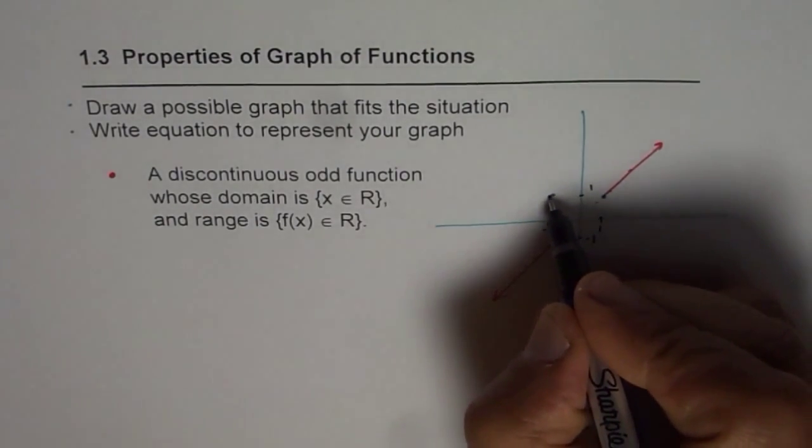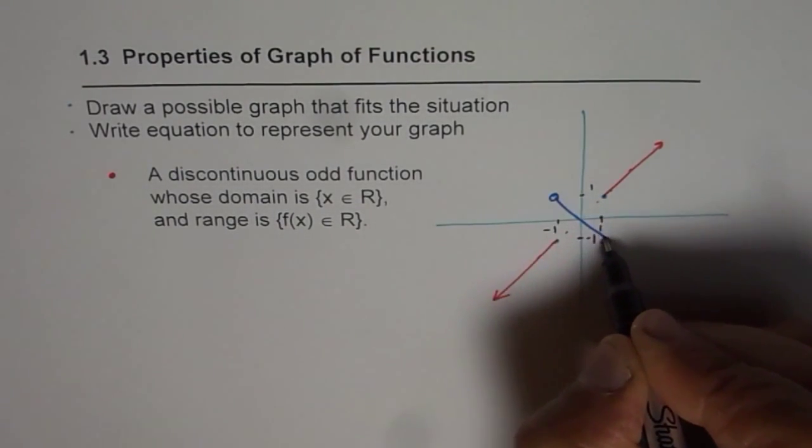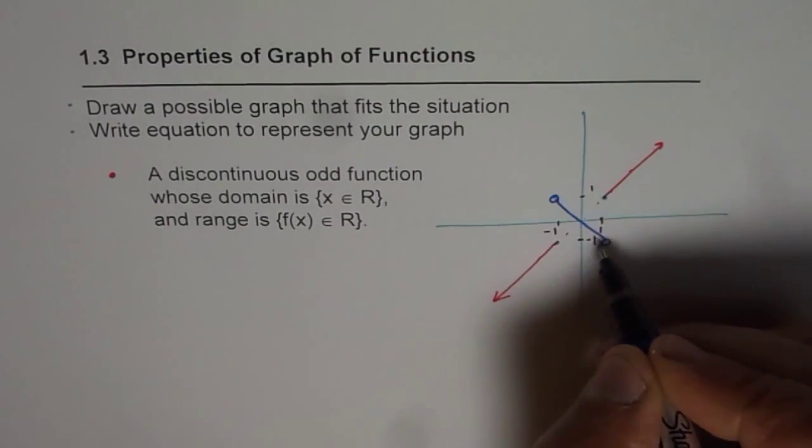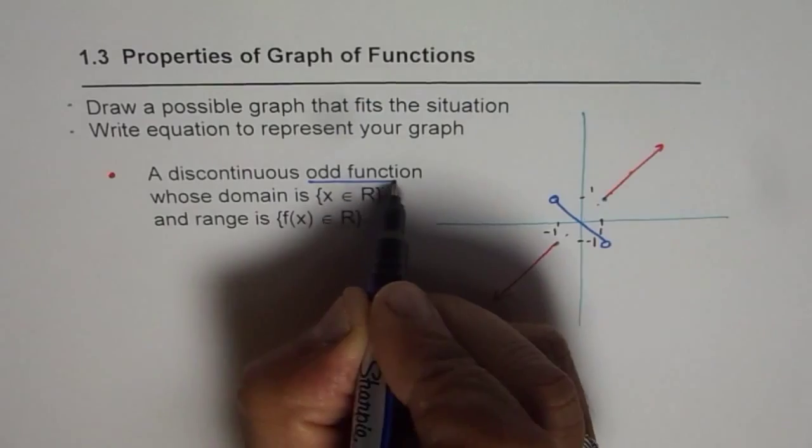Where we can have a hole here. At one and minus one, and join it with another diagonal line. Why am I using diagonal lines through origin? Because the function should be odd function.